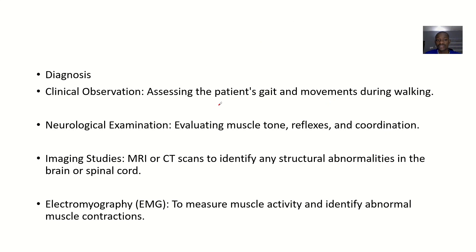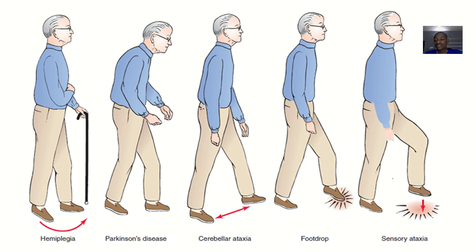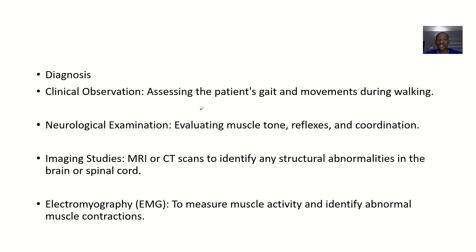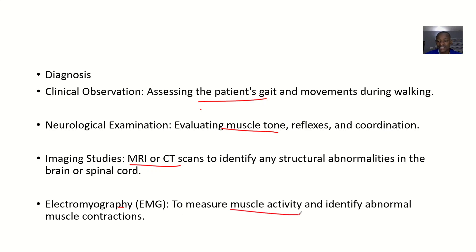Diagnosis involves several methods. Clinical observation: once you know the characteristics of a spastic gait, you can confirm the diagnosis by observing the patient's gait and movements. Neurological examination evaluates muscle tone, reflexes, and coordination. Imaging studies such as MRI or CT scan identify structural abnormalities in the brain or spinal cord. Electromyography measures muscle activity and identifies any abnormal muscle contractions.